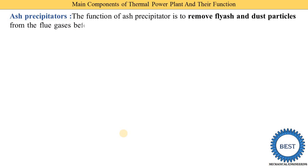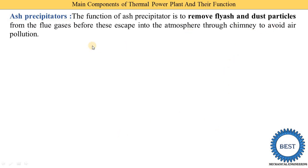The next component is the electrostatic precipitator. Its function is to remove fly ash and dust particles from the flue gases before they escape into the atmosphere through the chimney, to avoid air pollution. Nowadays, electrostatic precipitator components are fitted in chimneys for this purpose.